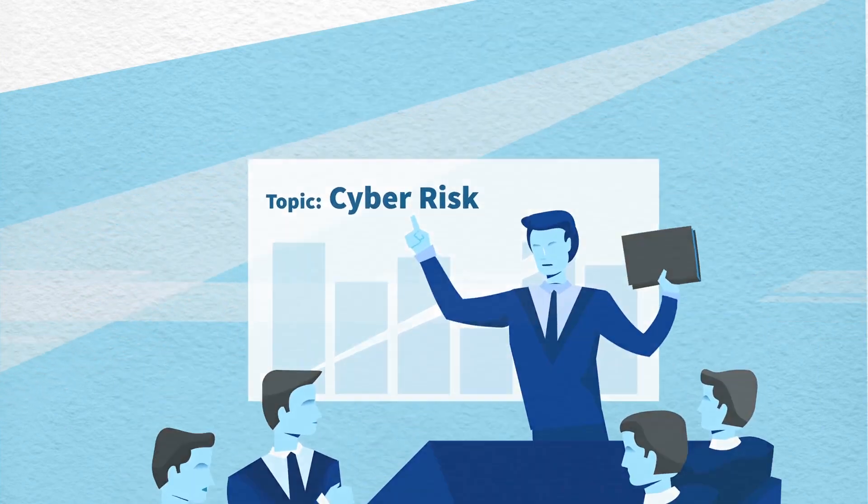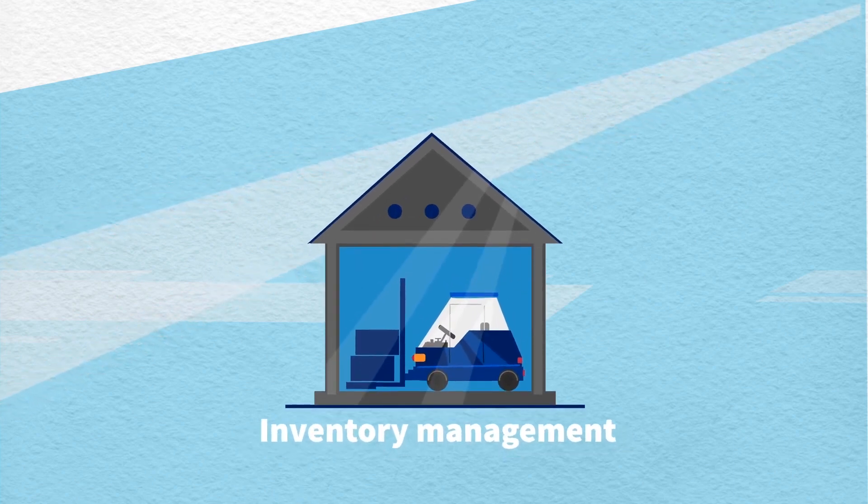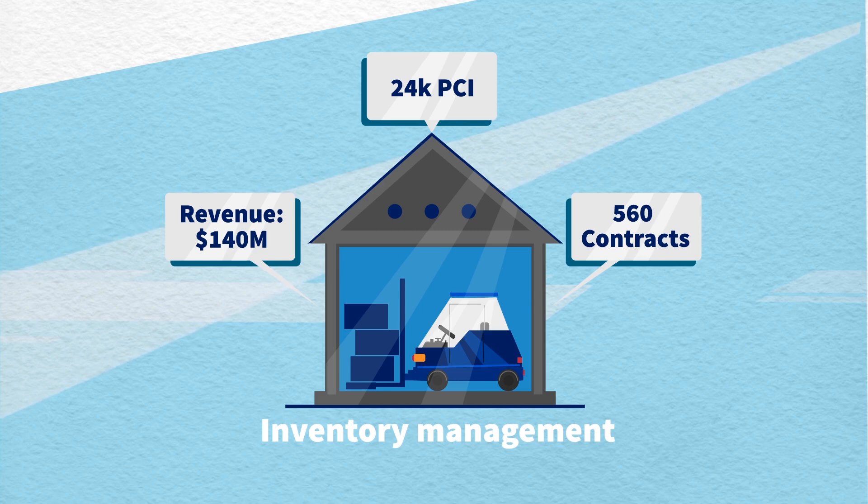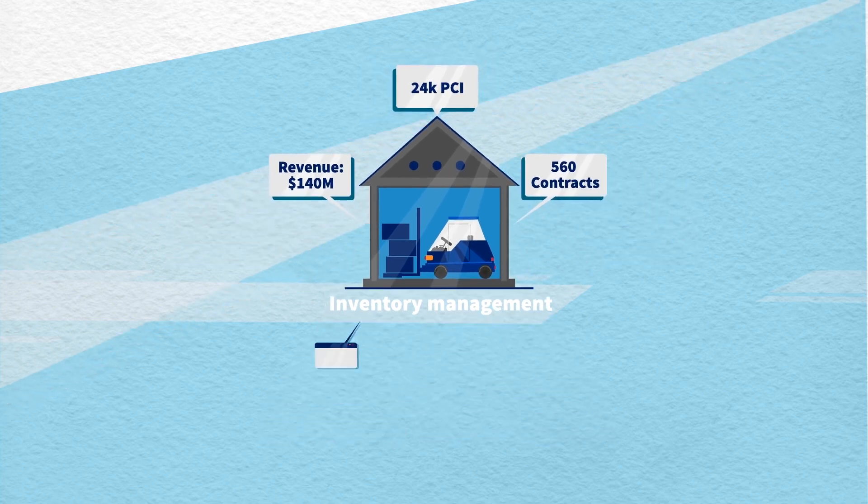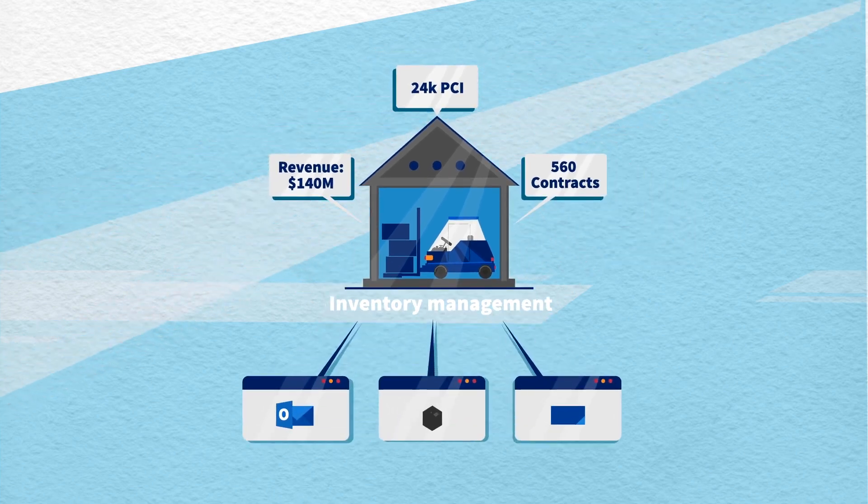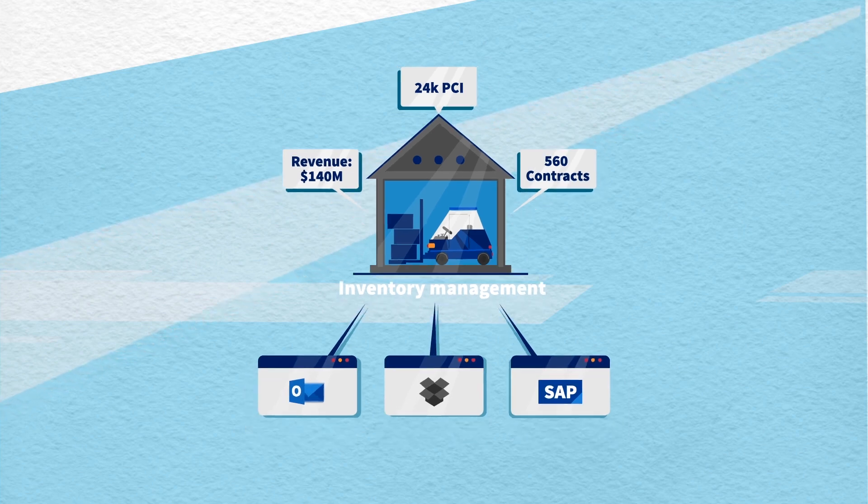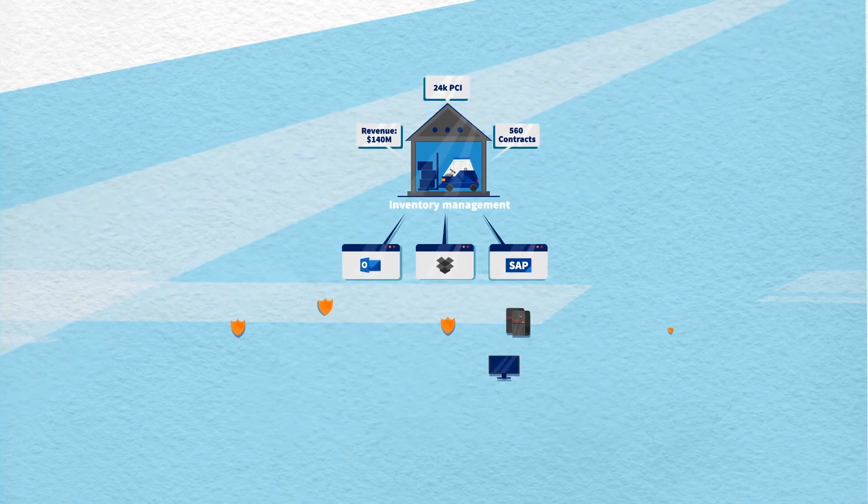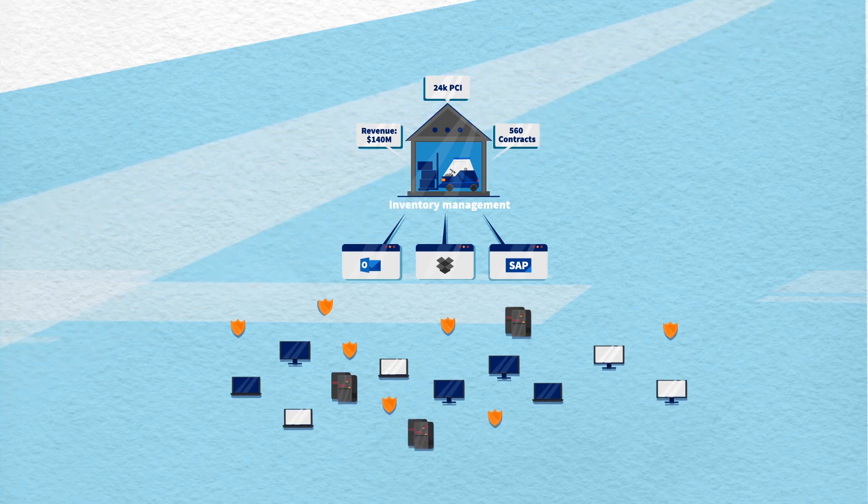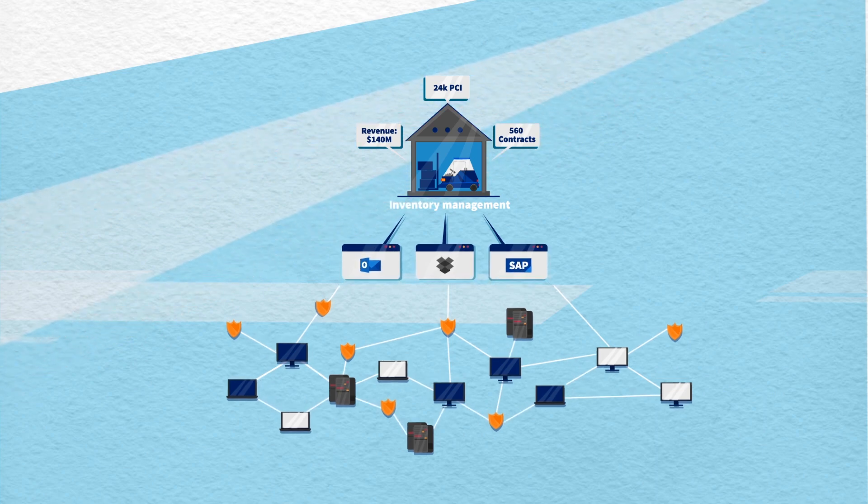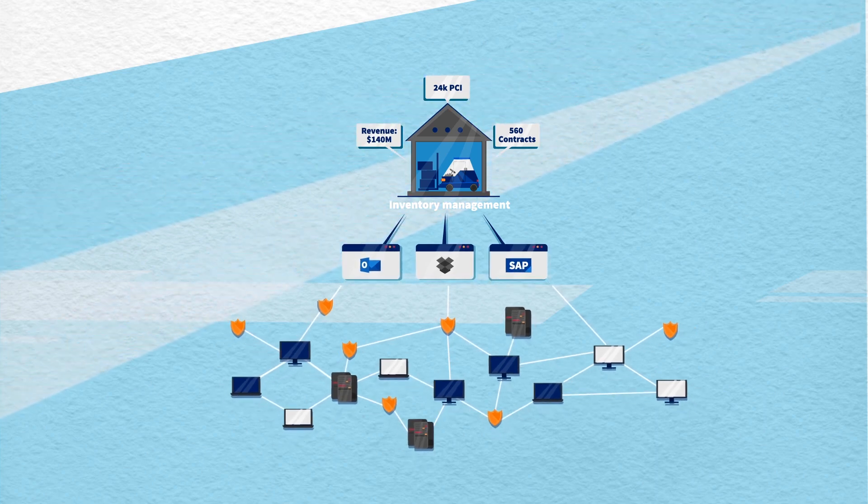Getting started with RQ is simple. First, build out your business portfolio with the organization's critical processes and assets. Then, identify the key business applications supporting that process. After modeling the IT environment with network and vulnerability scans, use RQ's system builder to establish traceability between the business applications and the underlying IT infrastructure.